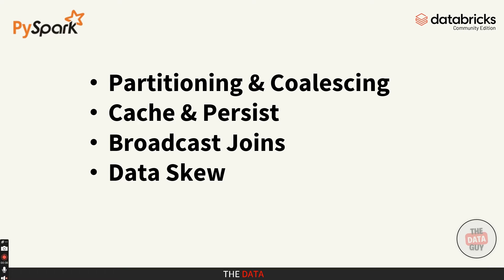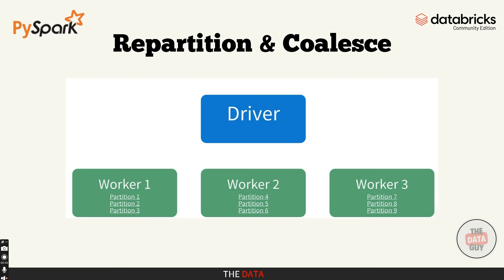In this video we will cover partitioning and coalescing, caching and persisting, broadcast joins, and handling data skew. So first, let's talk about repartition and coalesce — what they are and when to use them. First let's talk about partitions in Spark.